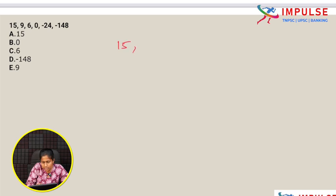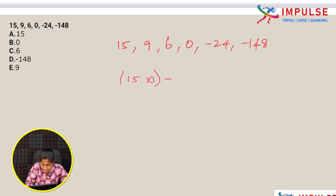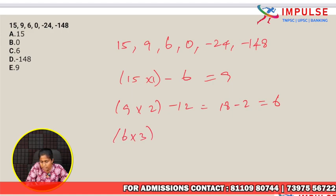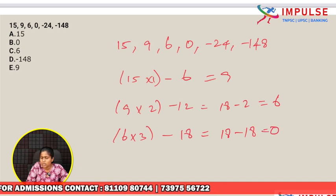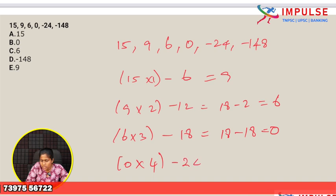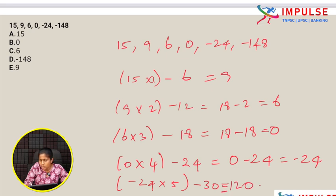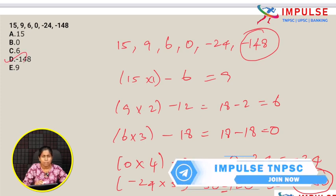Next question: 15, 9, 6, 0, -24, -148. Logic: 15 into 1 minus 6 equals 9. 9 into 2 minus 12 equals 6. 6 into 3 minus 18 equals 0. 0 into 4 minus 24 equals -24. -24 into 5 minus 30 equals -150. But the series shows -148, not -150. So -148 is the wrong number. Option D.